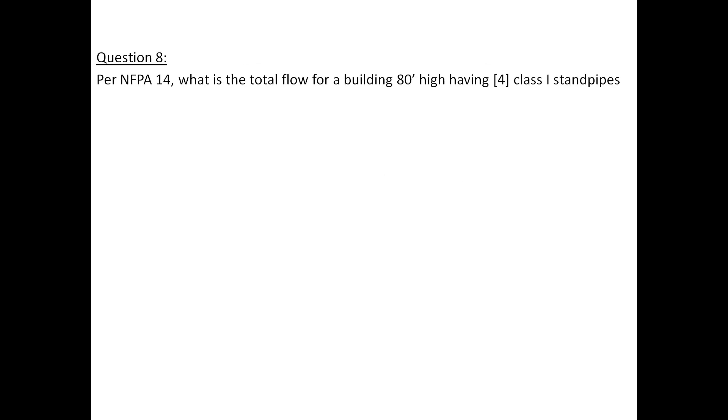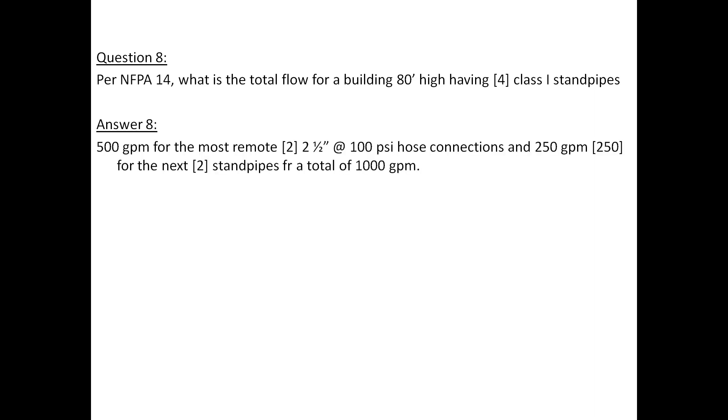Question 8: Per NFPA 14, what is the total flow for a building 80 feet high having 4 class 1 standpipes? Answer 8: 500 gallons per minute for the most remote 2 2.5 inch at 100 PSI hose connections and 250 GPM for the next 2 standpipes for a total of 1000 GPM.